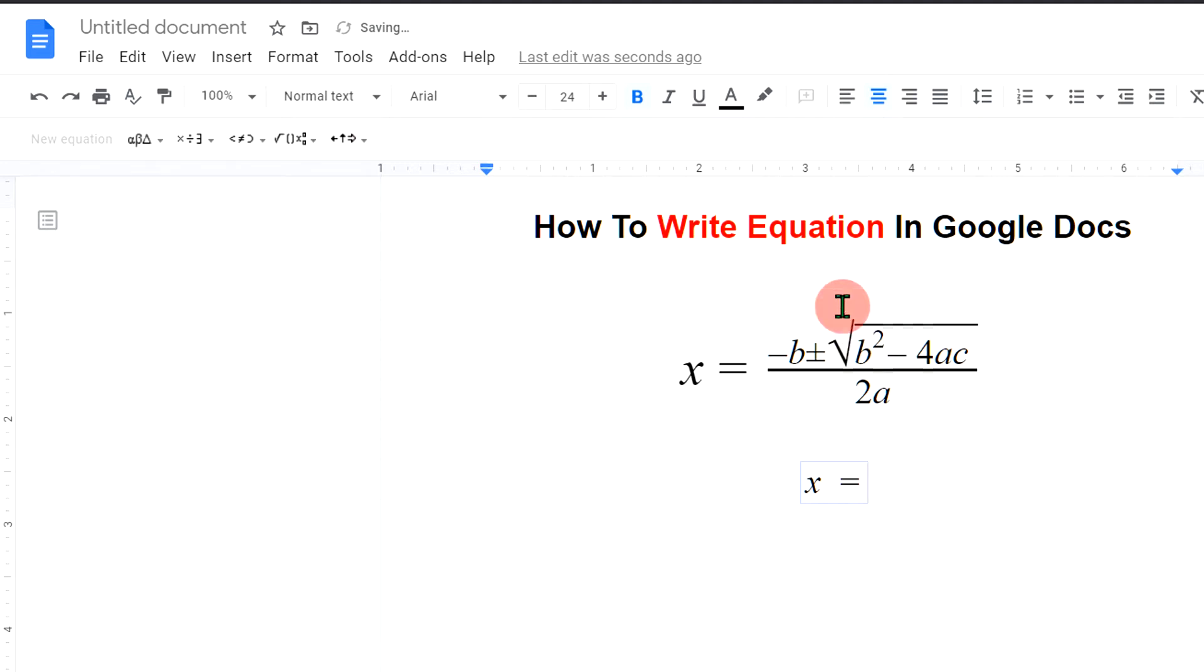equal to. Now for this equation we need numerator and denominator. To get numerator and denominator, select the first option a divided by b. Now we can type here minus b.